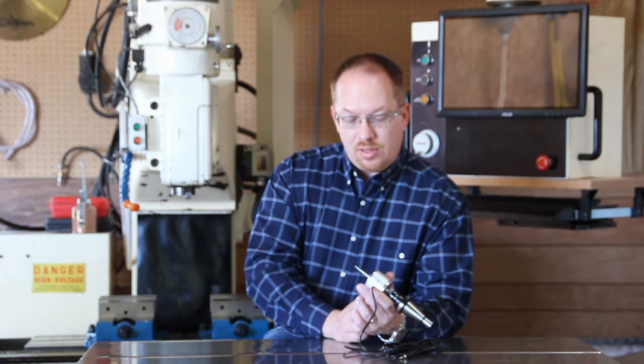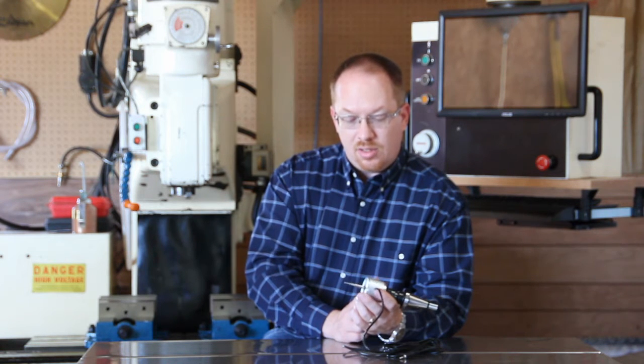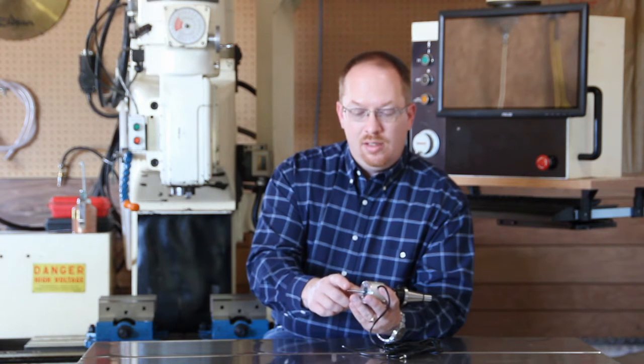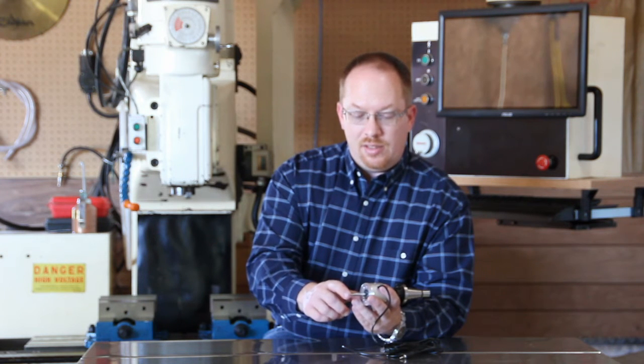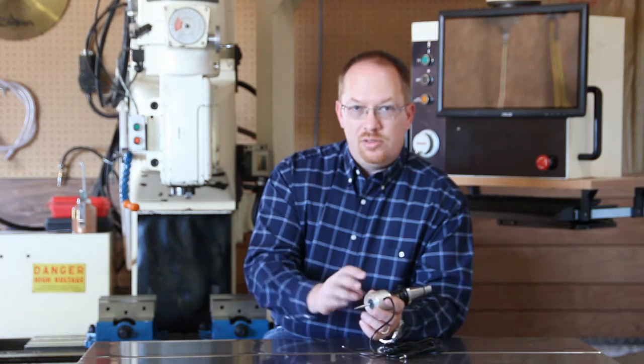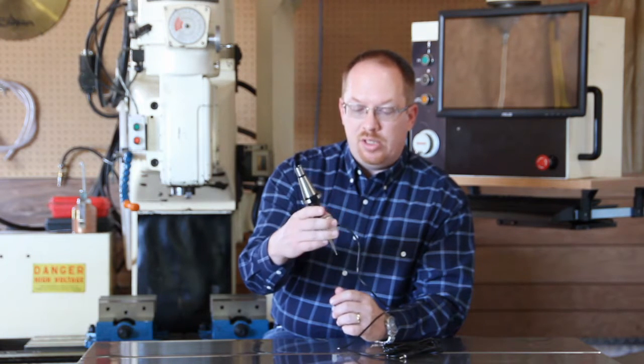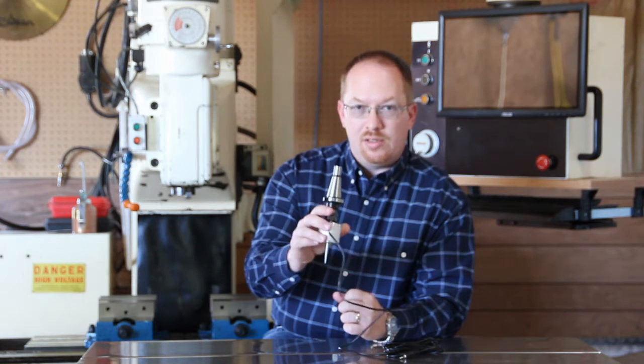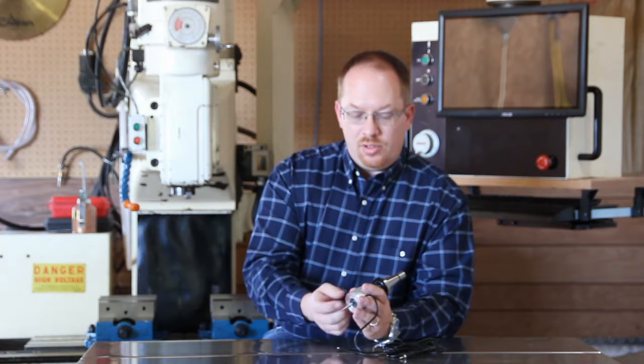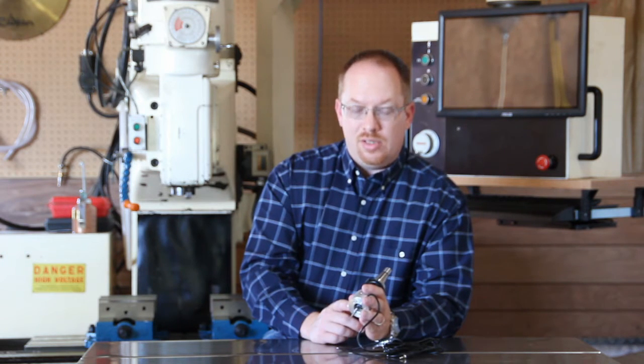And then we're also going to use our dial test indicator. Put it on a magnetic base and indicate in to the tip of the probe so that when we rotate the probe around in the spindle we'll be able to see if it's running concentric or not. And then we'll use the set screws to adjust it so that it is running concentric.